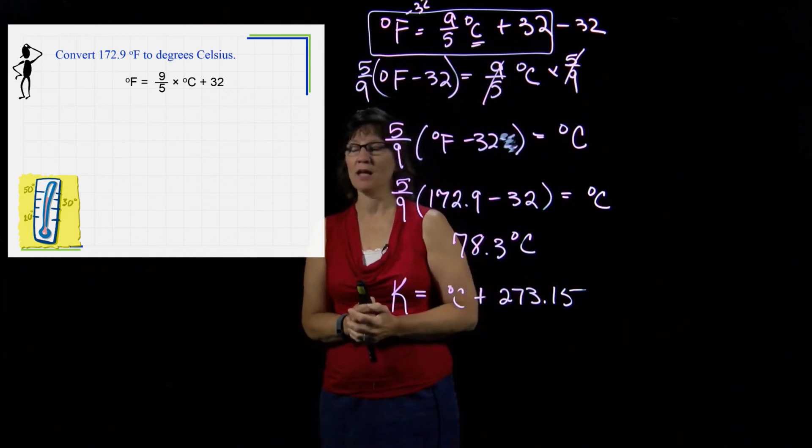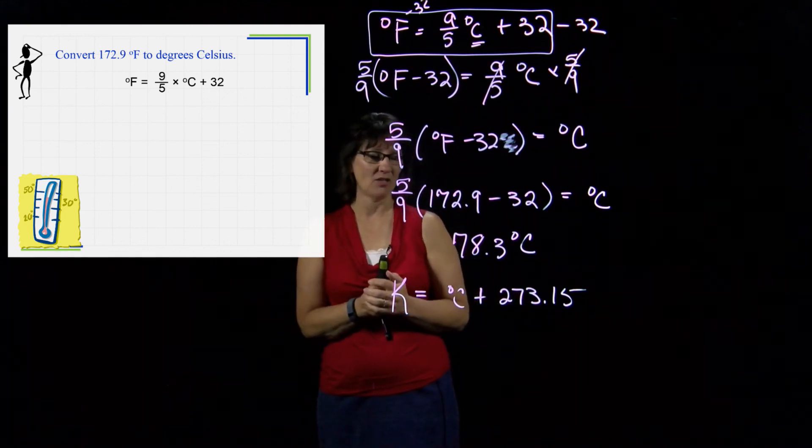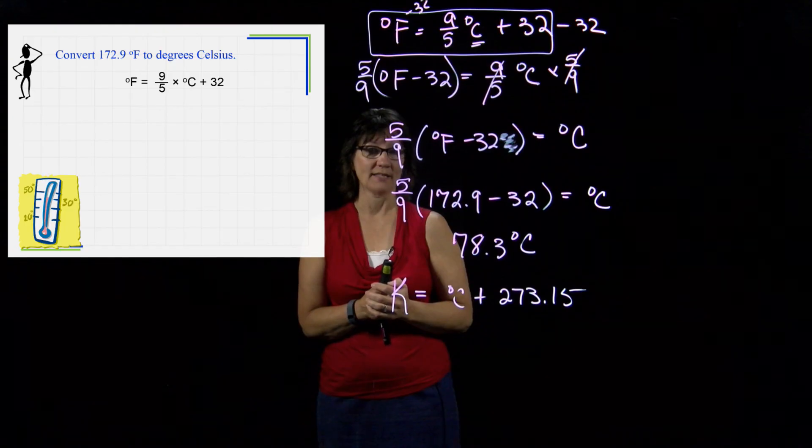It's much more common for you to have to do the one where you are going from Kelvin to Celsius. You take your temperature in Celsius plus 273. If you have extra sig figs and decimal points, you're going to need to add that .15. That's just an add and subtract problem. You need to keep that number in mind because you use it a lot in this class.